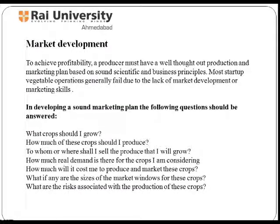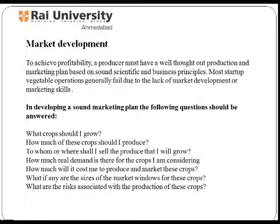Consequently, a potential grower cannot spend too much time in developing a production and marketing plan. Commercial vegetable production should always be viewed as a business first and a farming enterprise secondly. Personal views or beliefs are fine, but establishing a business based on consumer preference and demand makes for a more successful undertaking.